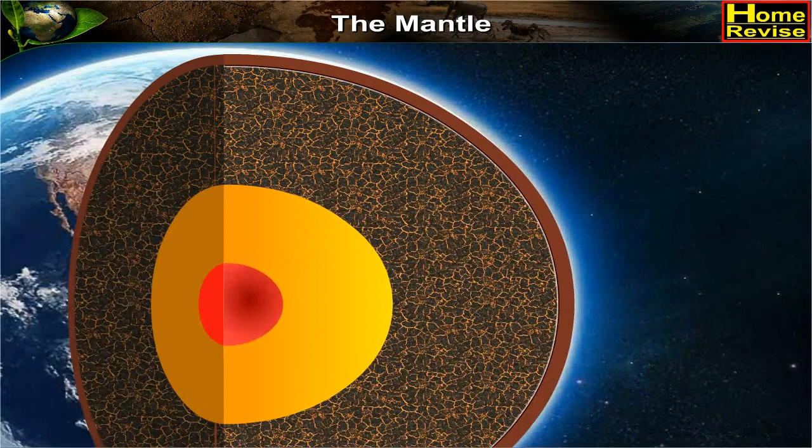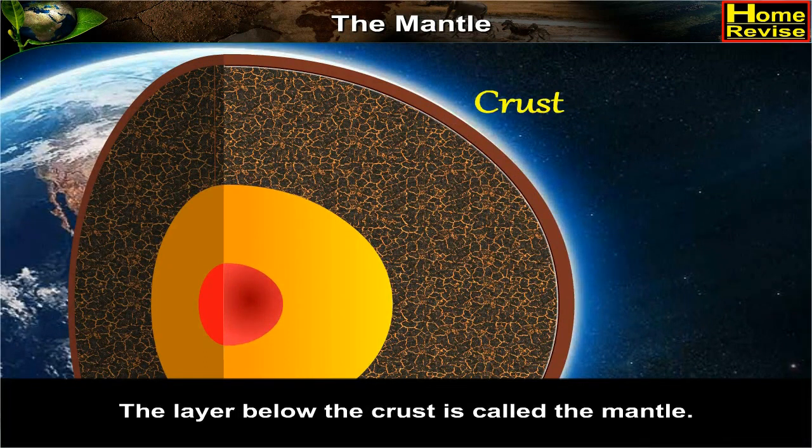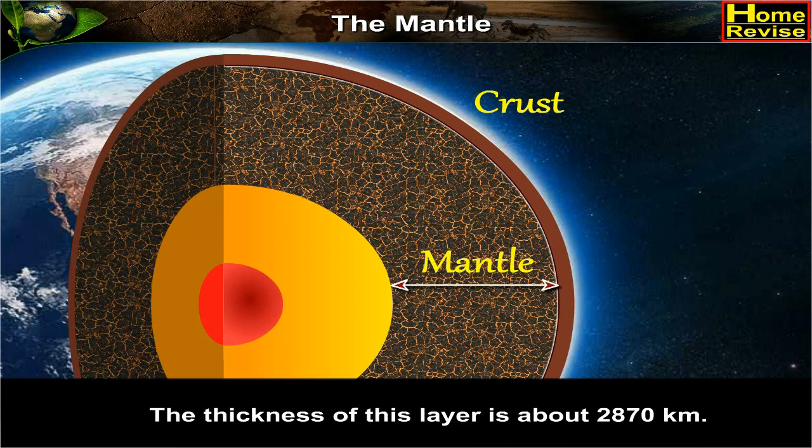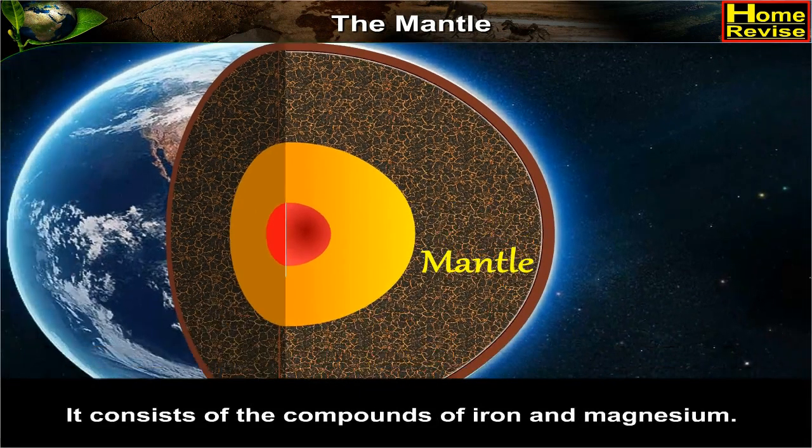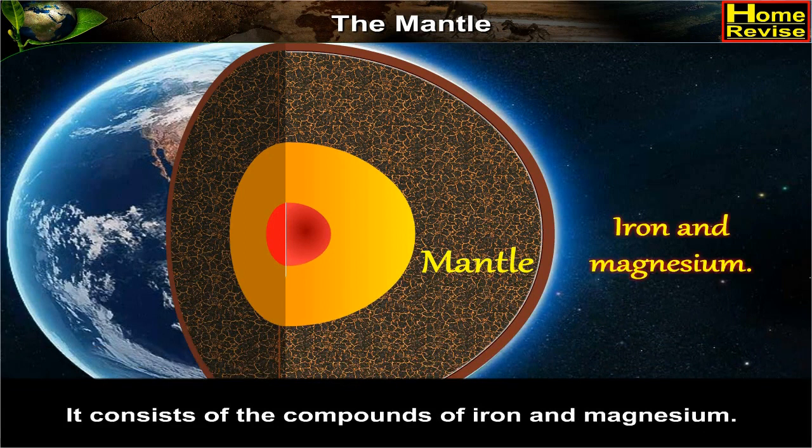The mantle: The layer below the crust is called the mantle. The thickness of this layer is about 2870 kilometers. It consists of the compounds of iron and magnesium.